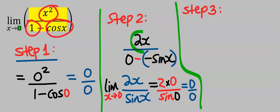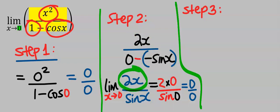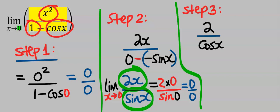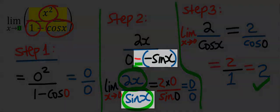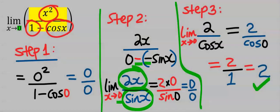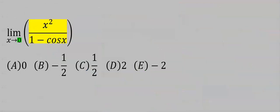Step three: apply L'Hôpital's rule again by differentiating independently. Differentiate 2x to get 2; differentiate sin x to get cos x. Take the limit as x tends to zero — our answer is 2. Remember that minus times minus gives plus. From the options, our answer is D.